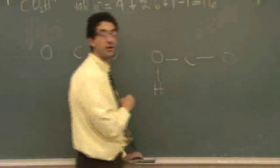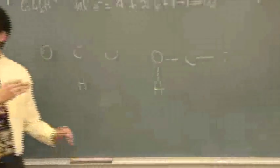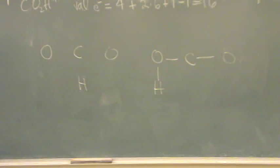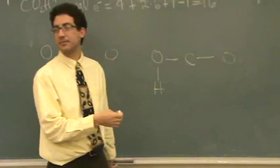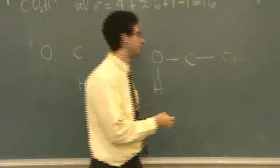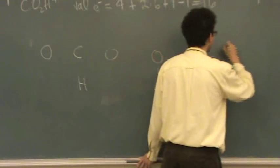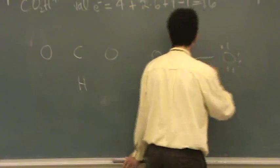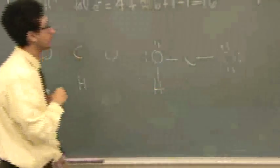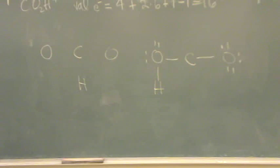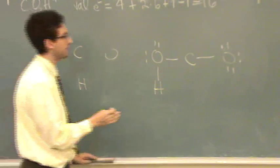Two, four, six — you draw the bonds of the skeleton first. That's six out of 16. Now you go to the terminal atoms, usually the oxygens: two, four, six, eight, ten, twelve, fourteen, sixteen. Uh-oh. What's the problem? Carbon has no octet. It's really messed up.